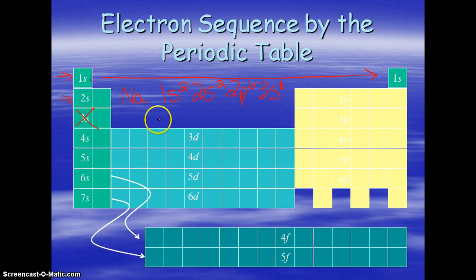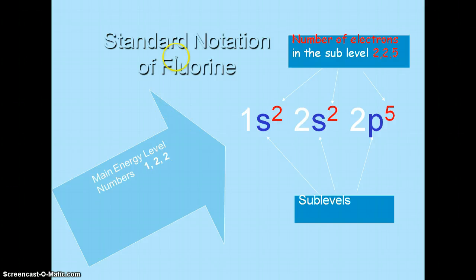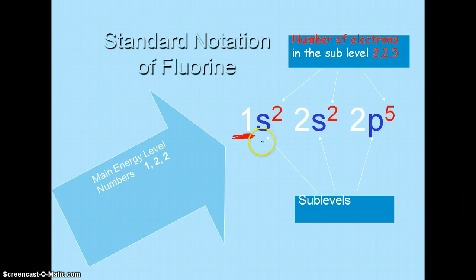Here I'm showing you a notation similar to the one we just wrote for sodium. The big numbers tell us the energy level — how far away from the nucleus, so the rings: 1, 2, 3, 4. The letter — S, P, and so on — tells us the actual orbital sublevel. These little exponent numbers tell us the actual number of electrons that are in that sublevel. So you're basically denoting exactly where these electrons are.